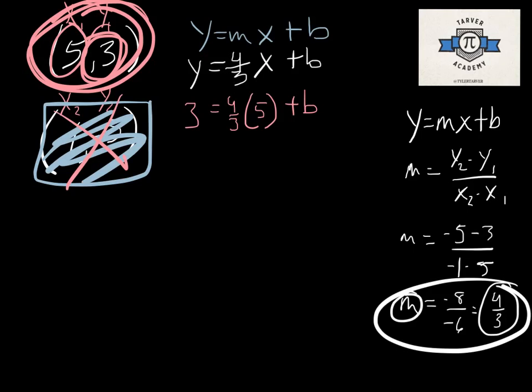So, now all we're doing is solving for b. What I need to do first? That's right. We need to multiply those two. So, we got 3 equals. And then I'm just going to multiply the 5 times the 4. So, it's 20 over 3 plus b. All right?